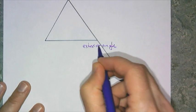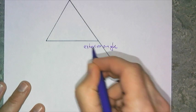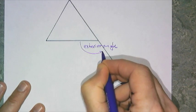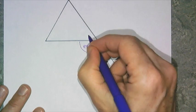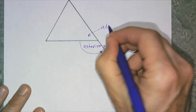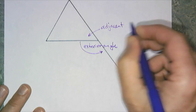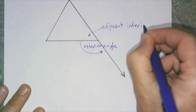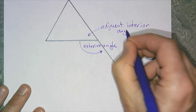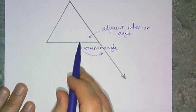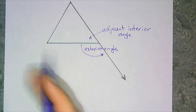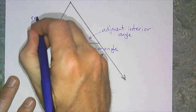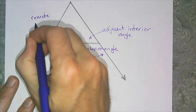If this is the exterior angle here, then this is an interior angle, but it is called the adjacent interior angle. And these are also interior angles, but they are called remote interior angles.